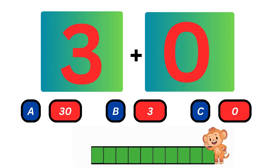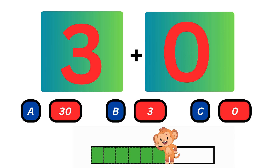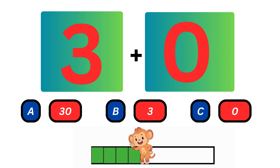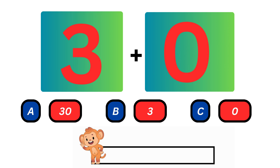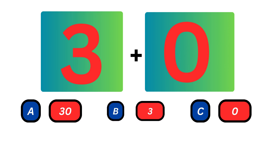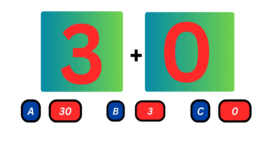What do you get when you add 3 and 0? When you add 3 and 0 you get 3. The answer is 3. When you add 0 to any number, the result is the same number.